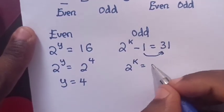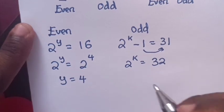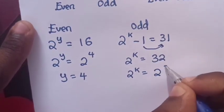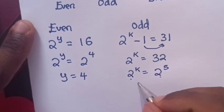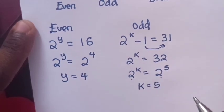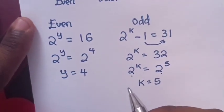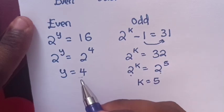We take the negative 1 to the right side. It will be 2 power k equals 32. 2 power k equals 2 power 5. Then we compare same base: k equals 5.